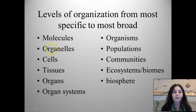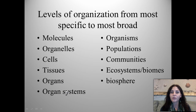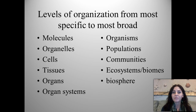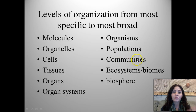Organelles working together make up a cell, such as a plant, animal, or fungus cell. Cells come together to form tissues, such as cardiac or muscle tissue. Tissues come together to form an organ — cardiac tissue forms the heart. Organs form organ systems; for example, the heart with blood vessels, lungs, arteries, and veins all working together. Organ systems form organisms. Organisms of the same species living together form a population. Populations of different animals, plants, fungus, and bacteria living together form a community.